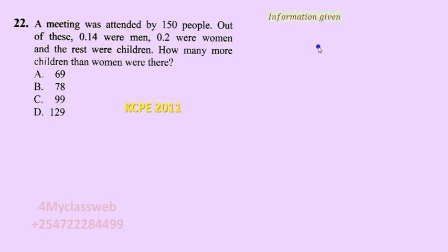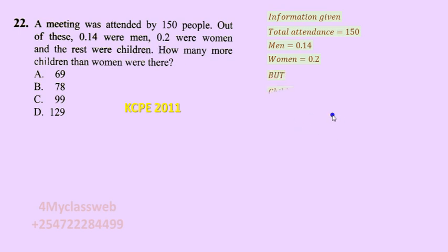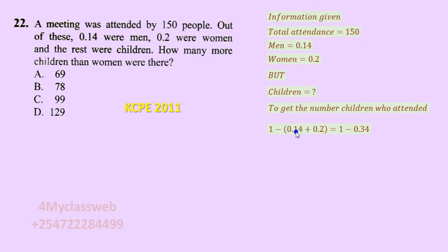To begin, let us get the information that has been given. We are told that the total attendance was 150 people. The fraction representing the number of men was 0.14, and the fraction representing women was 0.2. We are not given the fraction for children. To get this fraction, we need to find the combined fractions for men and women, then subtract from one — since one represents the whole attendance.